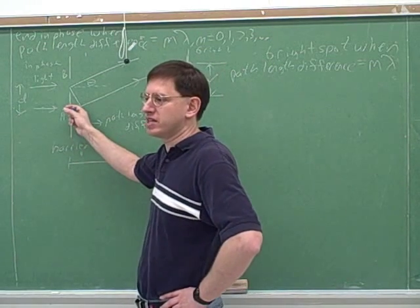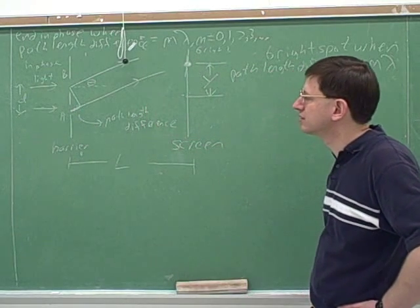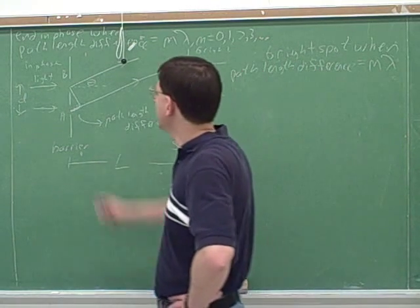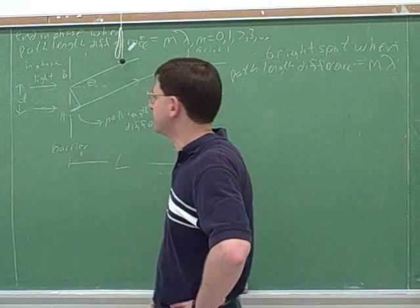So if we could just figure out how long this little segment is, we'd know the path length difference. Well, we know this angle is called theta, right? This is the angle between the beam and the center line.